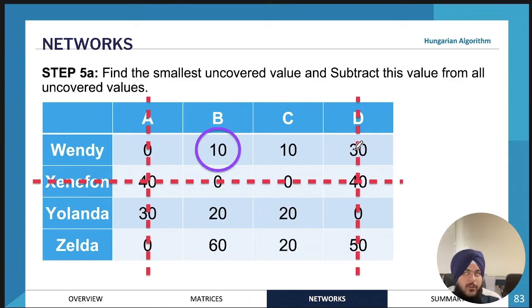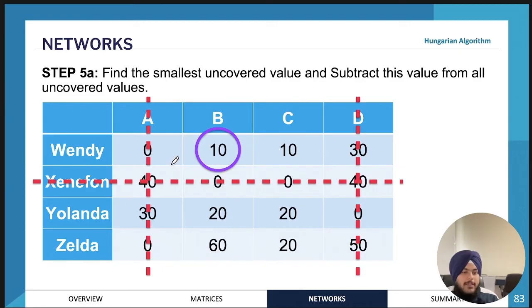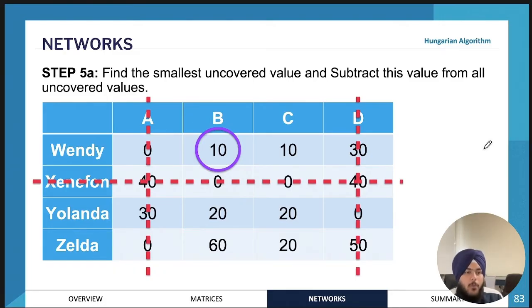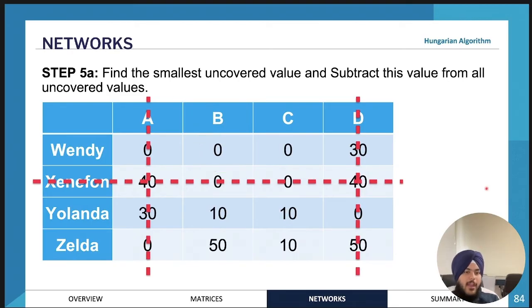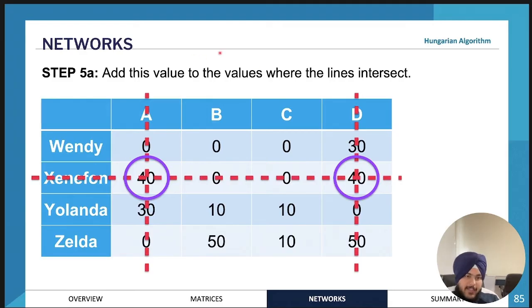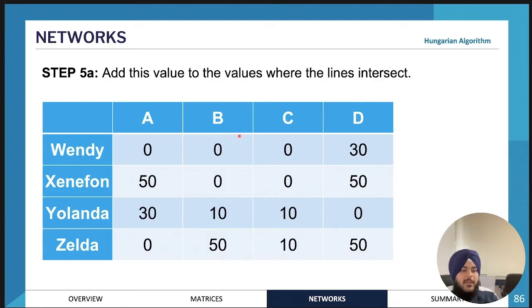The next step is to find the smallest uncovered value in the table — in this case it's 10. Subtract this value from all uncovered numbers. Regardless of how you drew your lines, whatever your uncovered numbers are, subtract 10 from all of them. Then add this value to wherever the lines intersect — so add 10 to each intersection point. After doing this, you get an updated matrix.